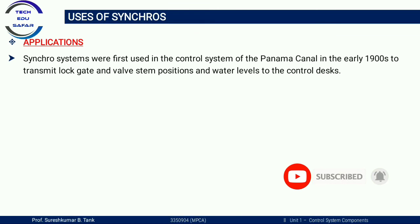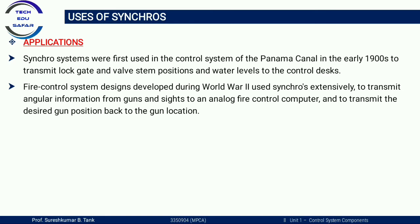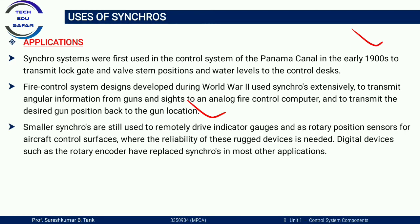Applications of synchros: First, synchro systems were first used in the control system of the Panama Canal in the early 1900s to transmit lock gate and valve stem positions and water levels to the control desk. Second, fire control systems developed during World War II used synchros extensively to transmit angular information from guns to an analog fire control computer and back. Third, smaller synchros are still used to remotely drive indicator gauges and as rotary position sensors for aircraft control surfaces.